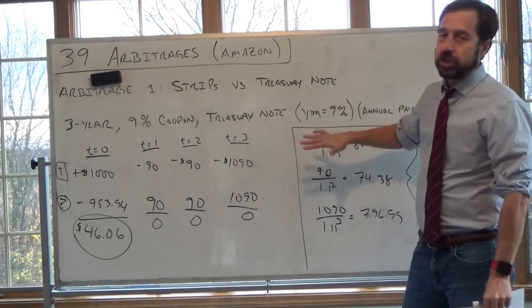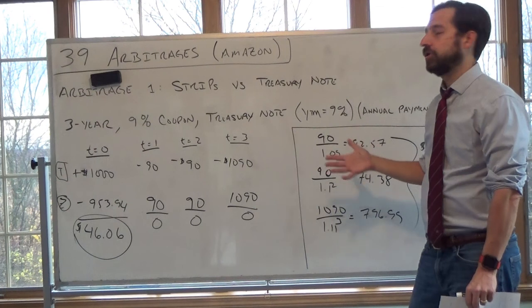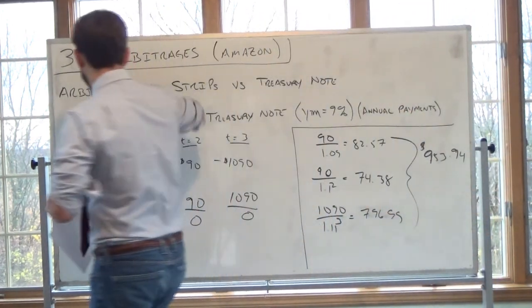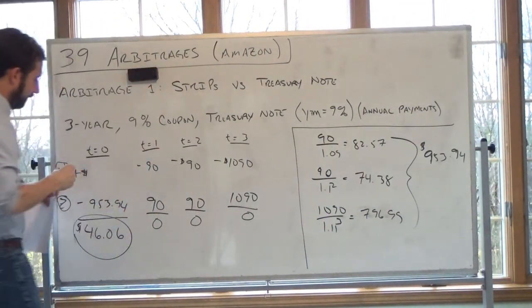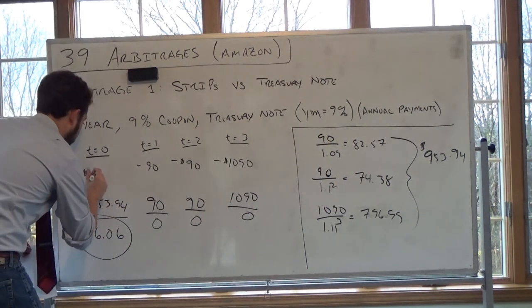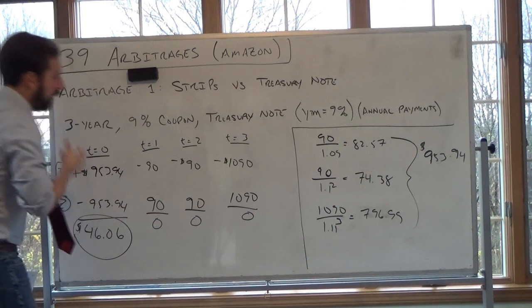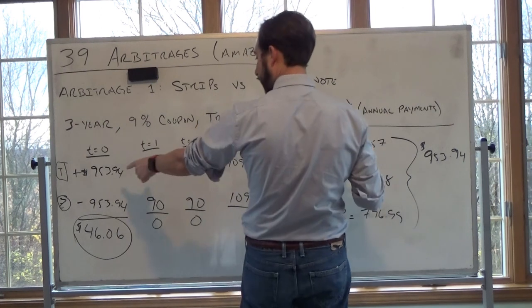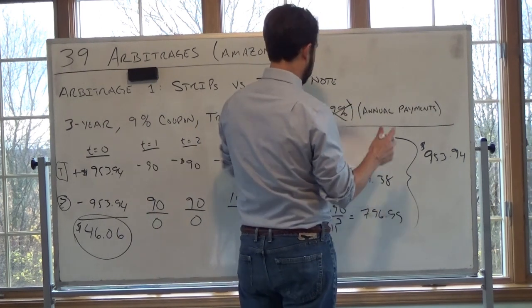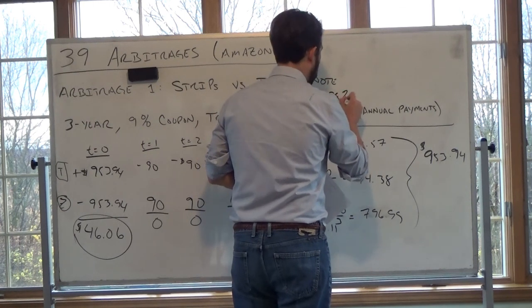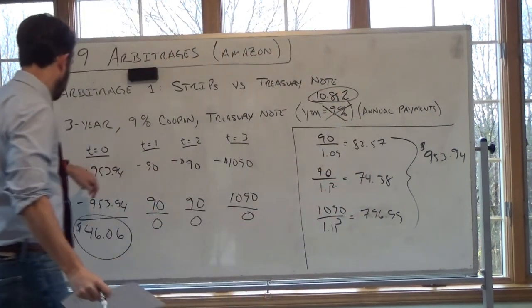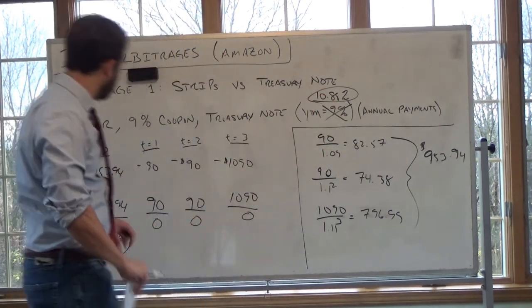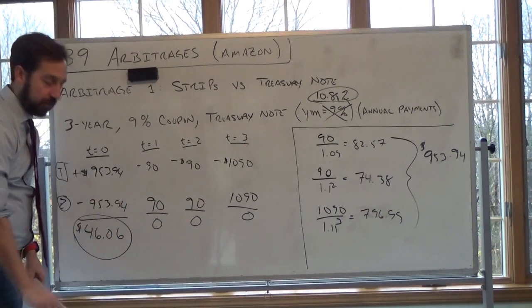So the question is, what would have to change in our scenario here such that there is no arbitrage? And there's a couple different ways that things can change. But the most obvious thing that could change is this treasury price is $953.94, which would mean the yield to maturity on this should be, so solving for the yield to maturity here, the yield to maturity were 10.88%. So that's how the treasury bond could adjust such that there is no arbitrage. So if the yield to maturity on this was 10.88%, then the bond price would be this, this arbitrage would be zero.